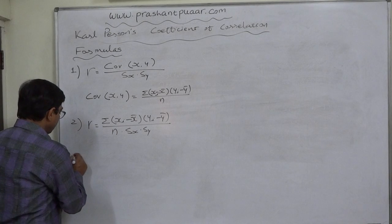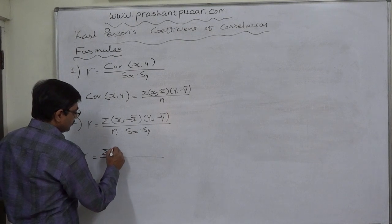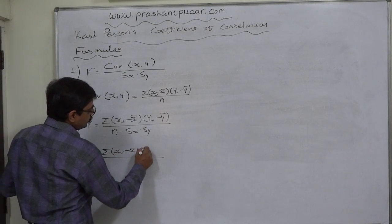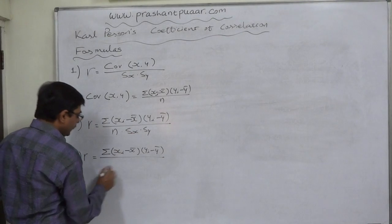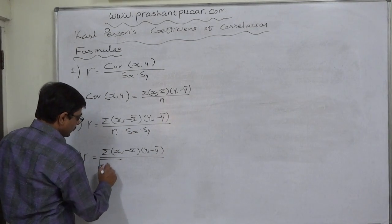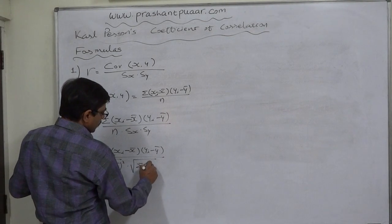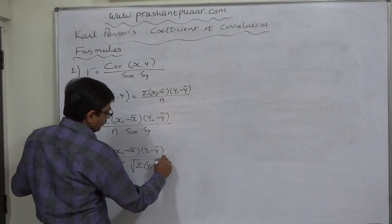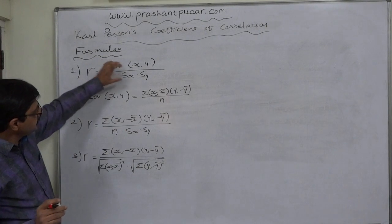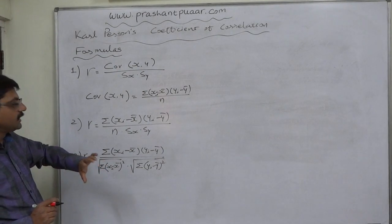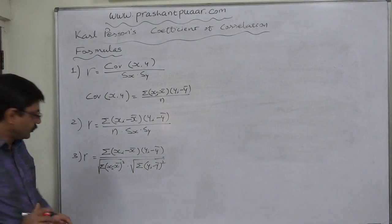We can further simplify this formula by substituting the values of sx and sy. The formula becomes: sigma (x minus x-bar)(y minus y-bar) divided by the square root of sigma (x minus x-bar) squared, into the square root of sigma (y minus y-bar) squared. We need not calculate the covariance or sx and sy separately — we can use the data directly and substitute the available summations to get the coefficient of correlation.